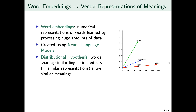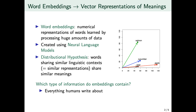One critical question that we must ask is: which type of information do embeddings contain? This is clearly not a simple answer. However, we can simplify this and conclude that everything that humans write about is in one way or another captured by those embeddings.